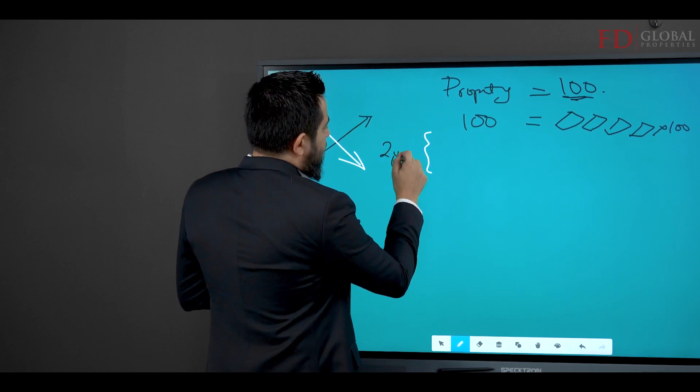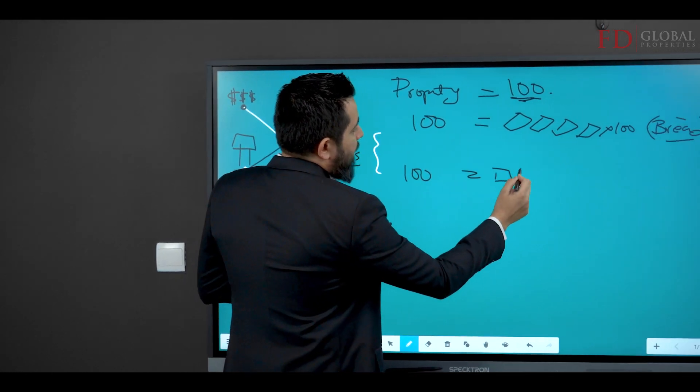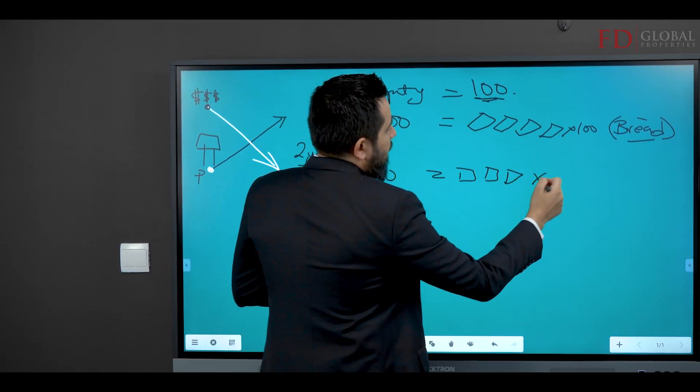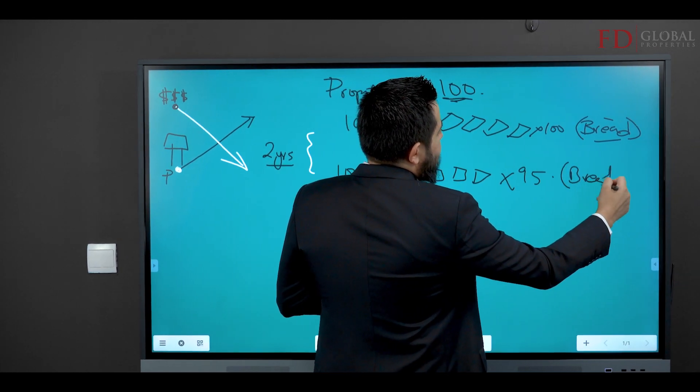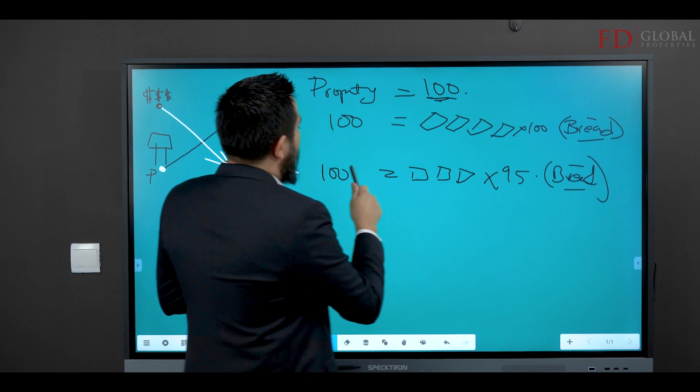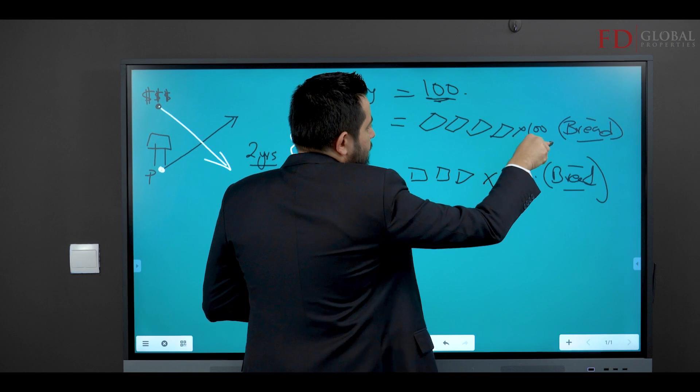You go back into the market with a hundred but you can only buy 95 pieces of bread.